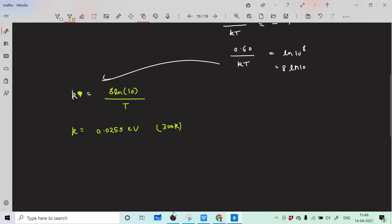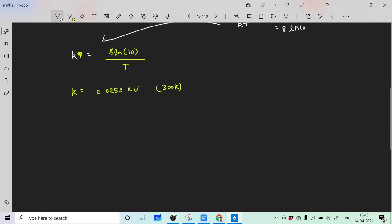So what we need to do - as you put k equal to 0.0259, this equals 0.60 divided by 8 ln 10, you have to do T by 300 because we took k for 300. So we are getting T equals 300 upon 0.0259 into 8 ln 10, which can be simplified to